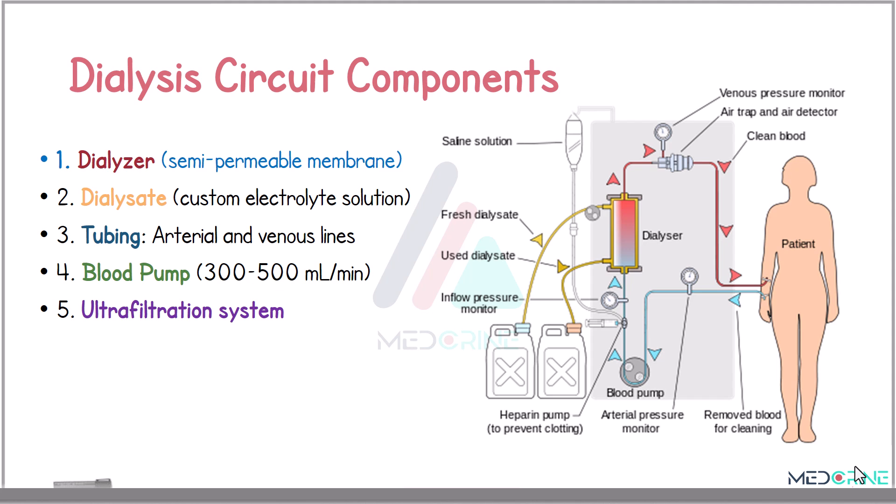In the dialysis circuit unit, we have a number of components including a dialyzer, which is a semi-permeable membrane that filters the blood; dialysate, which is a custom electrolyte solution that we use in dialysis; the tubings, which include arterial and venous lines; a blood pump that pumps approximately 300 to 500 ml of blood per minute; and an ultrafiltration system.